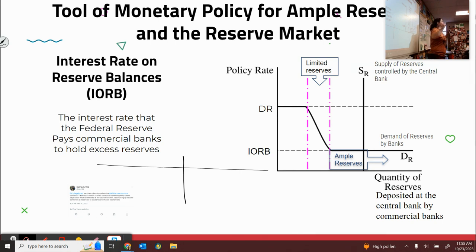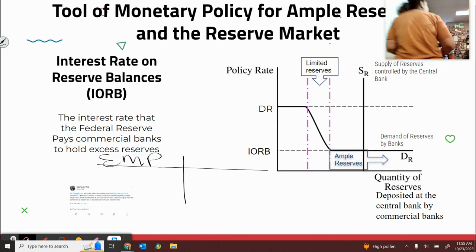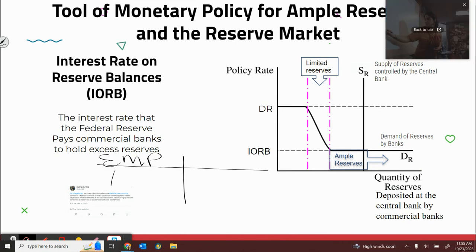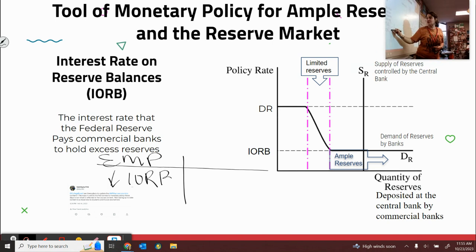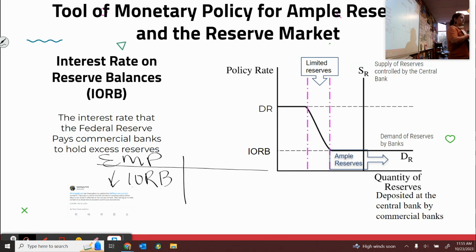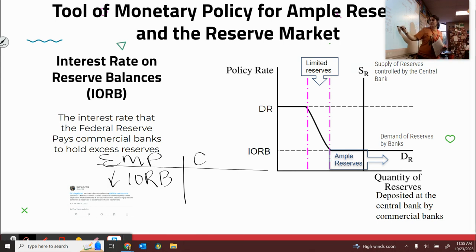So if I want them to loan out more and stimulate the economy into expansionary monetary policy, what should I do with the IORB? Raise or lower? Lower it. Lower the IORB — the interest on reserve balances — should be lowered. So for expansionary, we're going to lower the IORB. But for contractionary monetary policy, we'll raise the IORB.